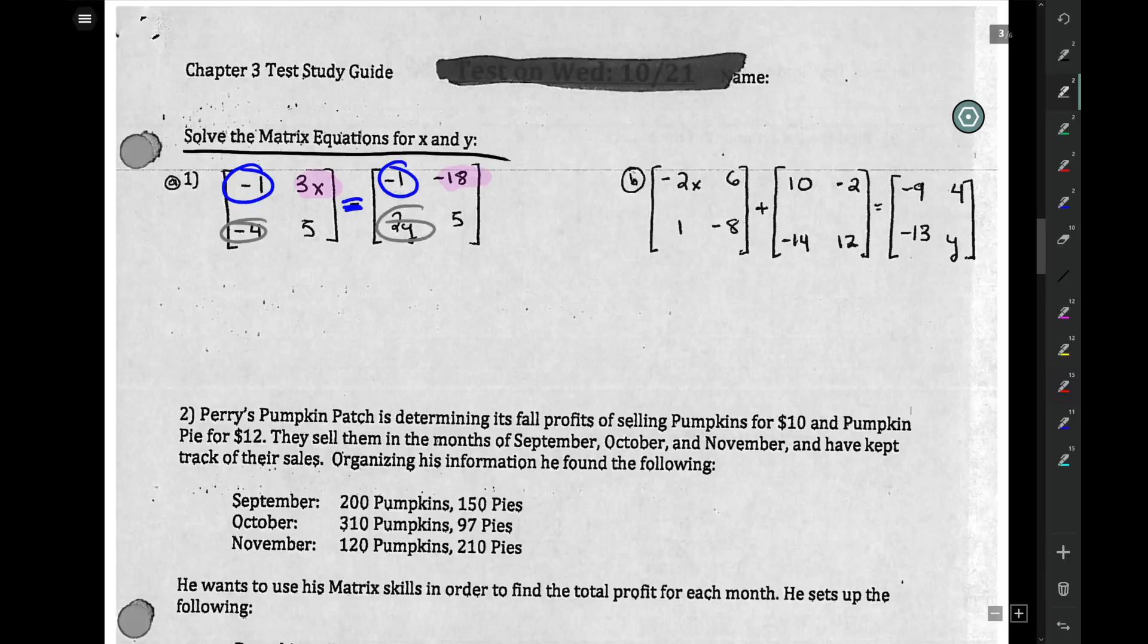So for solving these ones here, we're solving for x and y. That means that 3x is really equal to negative 18. So 3x equals negative 18, x equals negative 6. Now don't forget about y on the other side. Bottom left, 2y equals negative 4, y equals negative 2. Easy.